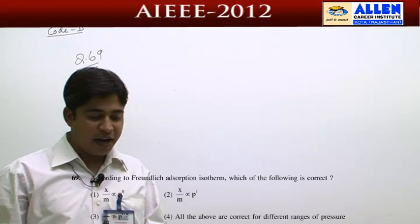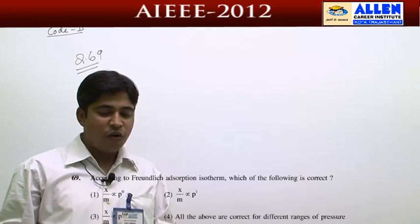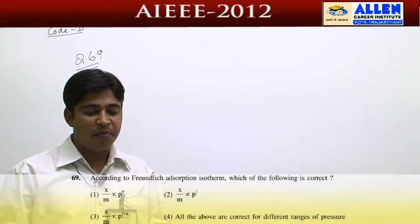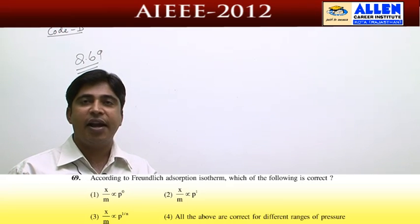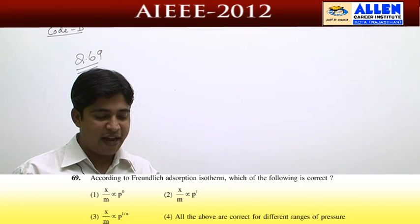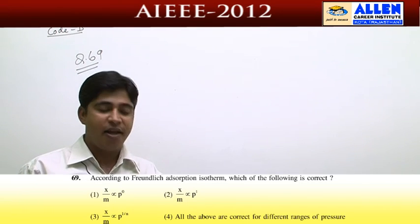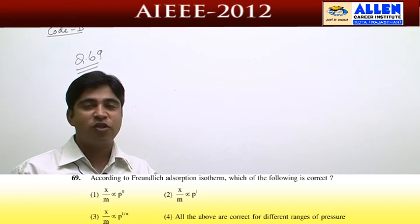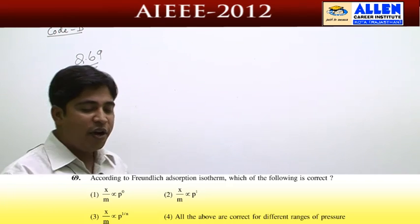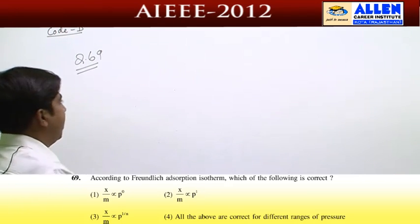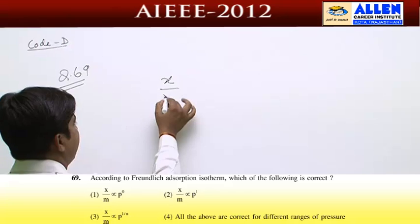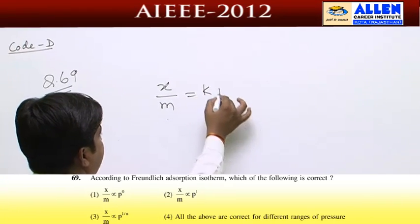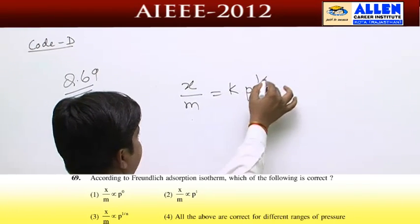Next question, number 69. According to Freundlich's adsorption isotherm, which of the following is correct? The Freundlich adsorption isotherm formula is: x/m = k·p^(1/n).